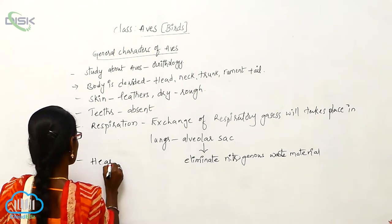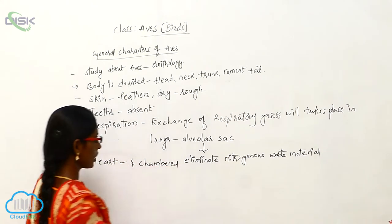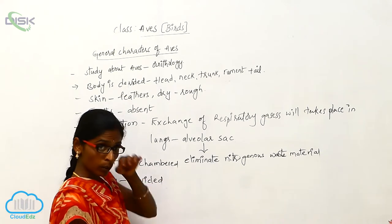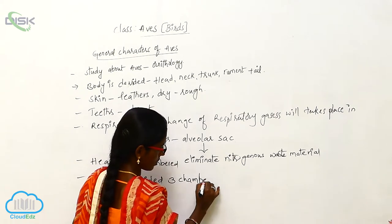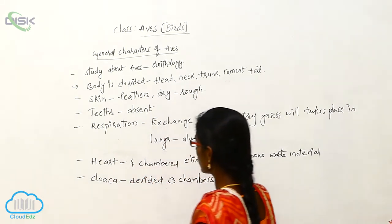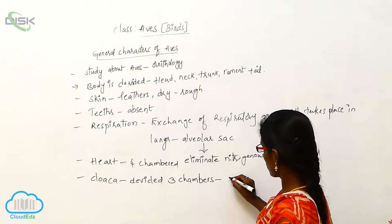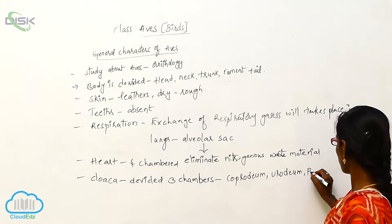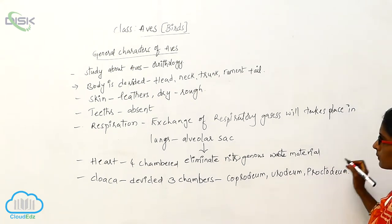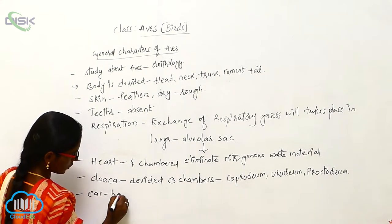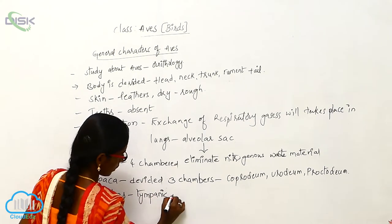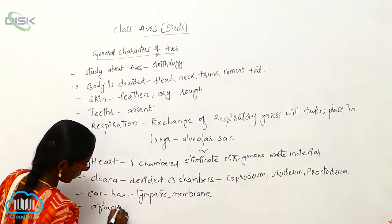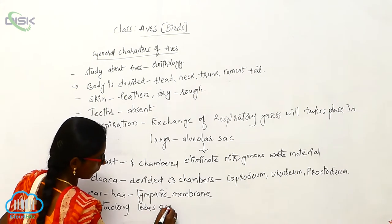The heart is four-chambered. The cloaca is divided into three chambers: coprodium, urodium, and proctodium. The ear has a tympanic membrane. Olfactory lobes are absent.